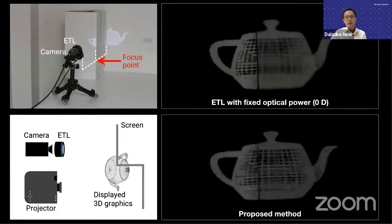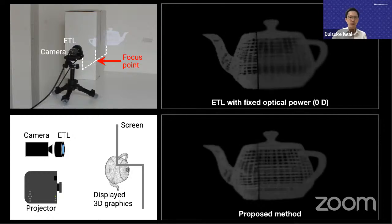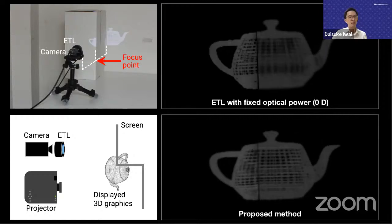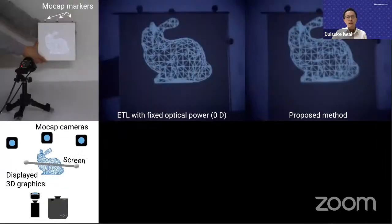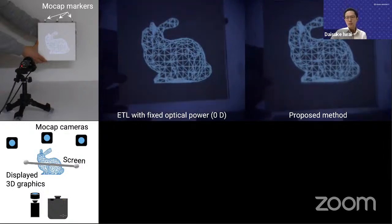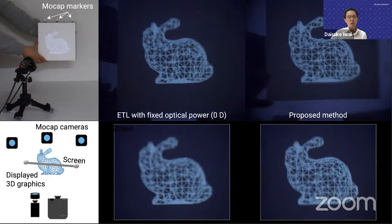In another experiment, we projected three Stanford bunnies on a flat screen such that the virtual image distance of each bunny from the ETL matched one of the physical objects. The focus point of the camera was changed from far to near — the projected bunny as well as the physical objects appeared in and out of focus from top to bottom according to focus point movement. We also verified the system for a non-planar projection screen, where all parts of a virtual teapot appeared focused when our technique was applied.